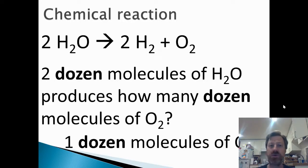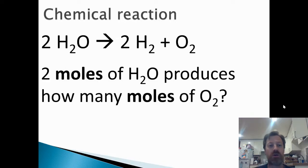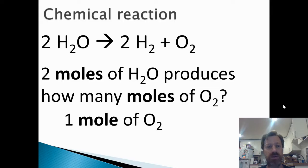So chemists often don't use dozen to talk about molecules and atoms because molecules are so tiny, we need a super big number. What's that super big number? Of course, it's the mole. So we could also ask ourselves, two moles of H2O produces how many moles of O2? And what we'll see, of course, is it's one mole of O2. Same relationship, same ratio, as if it was just molecules or dozens of molecules.